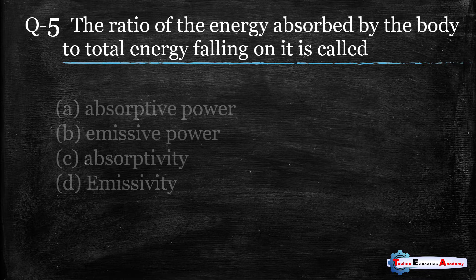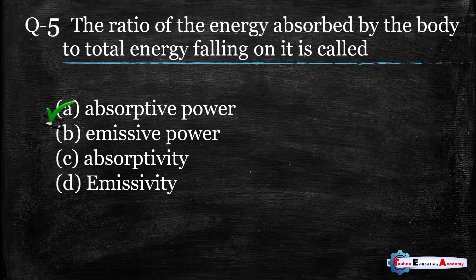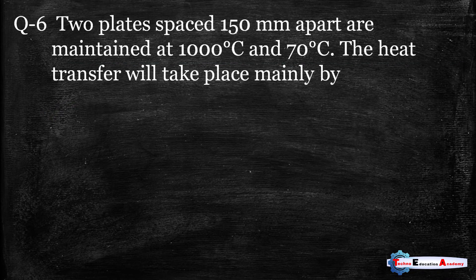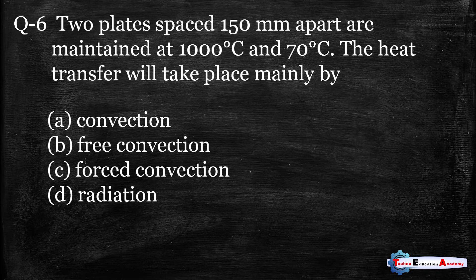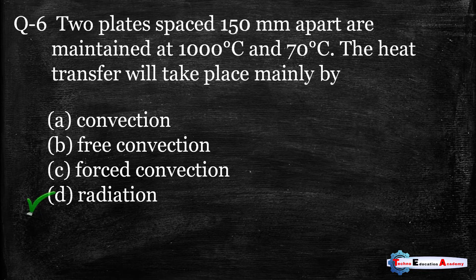Question number five: the ratio of the energy absorbed by the body to the energy falling on it is called absorptive power. Question number six: two plates spaced 150 mm apart are maintained at 1000°C and 70°C — the heat transfer will take place mainly by? Since there is no physical contact between the plates and no medium is required, heat is transferred by electromagnetic waves. So the right answer is option D: radiation.